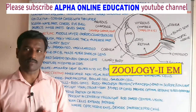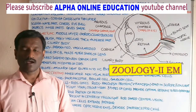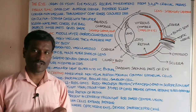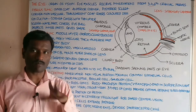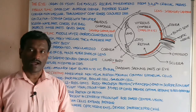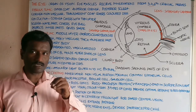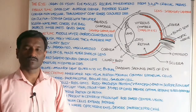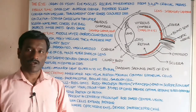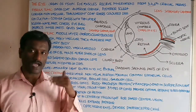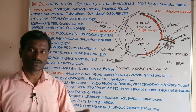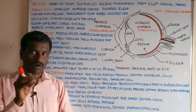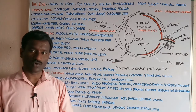Let us discuss about the eyeball. The eyeball is located in a bony depression called the eye orbit. The eyeball is associated with structures including eyelids, eyelashes, eyebrows, and lacrimal glands. These parts give protection to the eyeball.